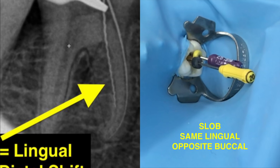So now we've taken our radiograph, and right away you can zone in on this Hedstrom file, which looks totally different than our regular K-file. And the SLOB rule still applies — absolutely. This is one simple way to learn the SLOB rule.